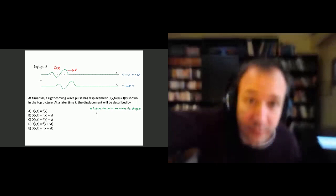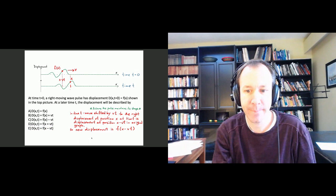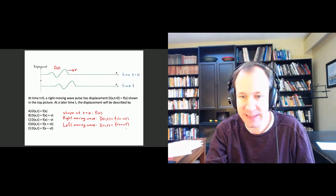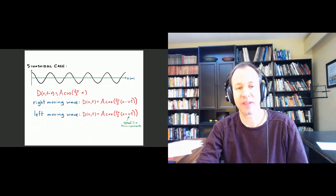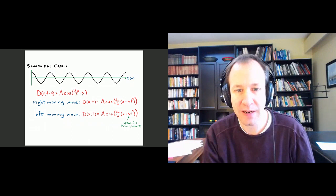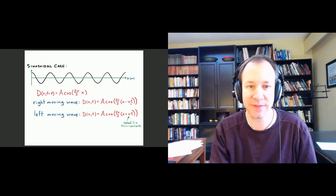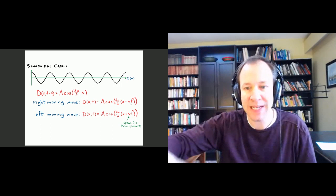The answer is D(x, t) = f(x − vt). If it's a left-moving wave, we would add vt instead. For a traveling sinusoidal wave where the initial shape is cosine(2π/λ · x), at some later time we replace X with X − vt. So D(x, t) = A cos(2π/λ · (x − vt)). Now we have a function telling us displacement at any time and any position. For a left-moving wave, it would be X + vt.